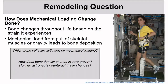I'd like you to take a few minutes to pause and answer the two questions in the gray box: which bone cells are activated by mechanical loading? And how do you think bone density would change in zero gravity? And maybe, how would astronauts counteract these changes?